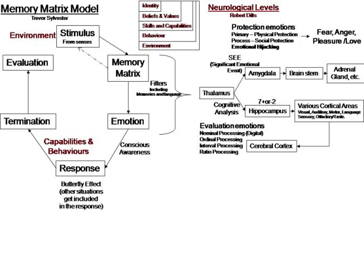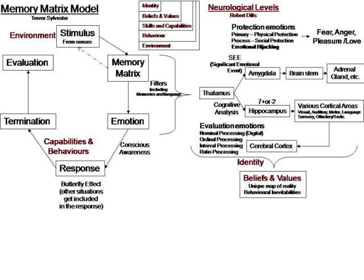As a person gets more experienced, they begin to be able to put intervals in, and eventually ratio processing — this is where you get the ability to think outside the box. First, second, third — well, in the great scheme of things, it doesn't matter. It's through these thought processes that our identity springs, coming from our beliefs and values and our unique map of reality, which is going to be completely different to everybody else's. And that's where behavioural inevitabilities arise: that person always does that, or in this situation they always behave in that way.